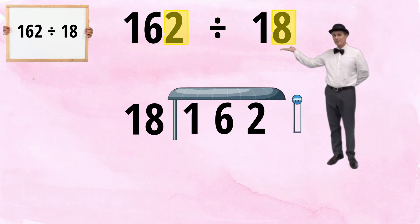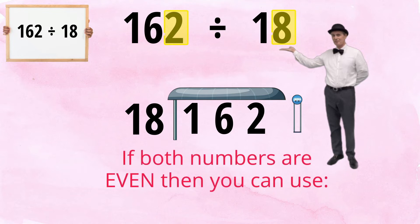They are both even numbers. If both numbers are even, then you can use a strategy I call half-eiding.